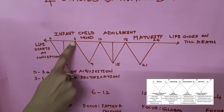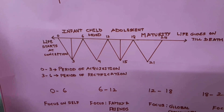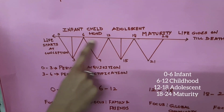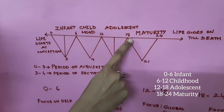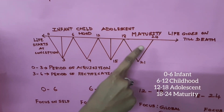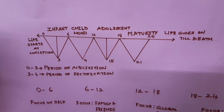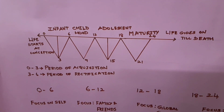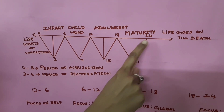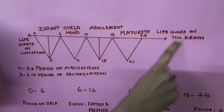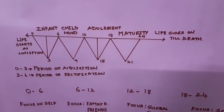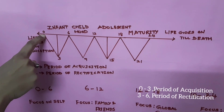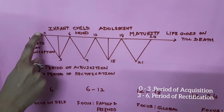She divided development into four stages: 0 to 6 she called infant, 6 to 12 childhood, 12 to 18 adolescent, and 18 to 24 maturity. Development continues until death. According to her, life starts at conception.